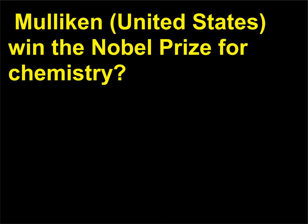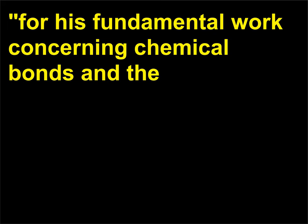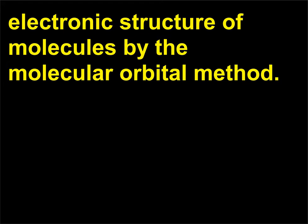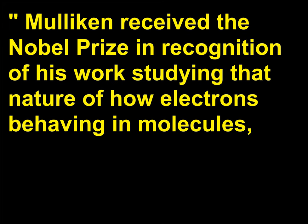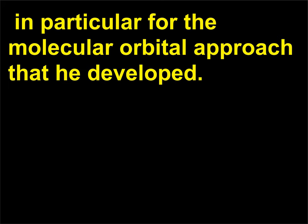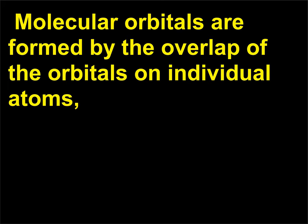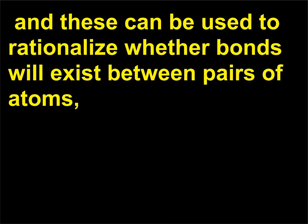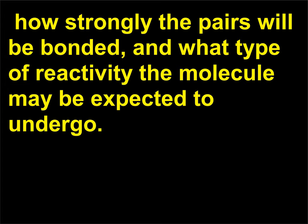For his fundamental work concerning chemical bonds and the electronic structure of molecules by the molecular orbital method. Mulliken received the Nobel Prize in recognition of his work studying the nature of how electrons behave in molecules, in particular for the molecular orbital approach that he developed. Molecular orbitals are formed by the overlap of the orbitals on individual atoms, and these can be used to rationalize whether bonds will exist between pairs of atoms, how strongly the pairs will be bonded, and what type of reactivity the molecule may be expected to undergo.